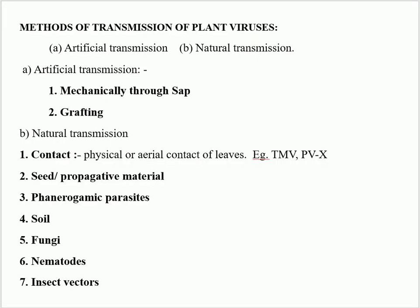Now let us see the different methods of transmission of plant viruses. There are two methods: artificial transmission and natural transmission. Artificial transmission occurs mechanically through sap or grafting. Natural transmission occurs through contact by physical or aerial contact of leaves — for example, TMV and PVX. Second natural transmission is via seed or propagative material. Third is through phanerogamic parasites. Likewise, plant viruses may be transmitted through soil, fungi, nematode, and insect vectors.